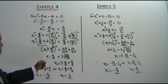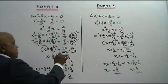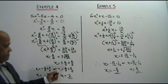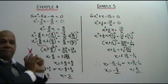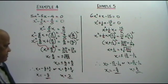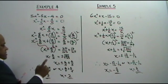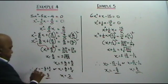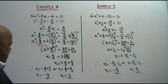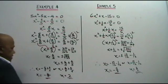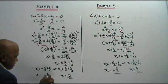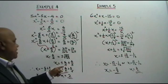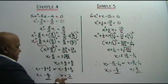Therefore, x minus 4 over 5 equals to plus or minus the square root of 36 over 25, which is 6 over 5. Negative 4 over 5, bring it to the other side — you get positive 4 over 5. So from here, you get two values for x. One value is negative 6 over 5 plus 4 over 5, which gives you negative 2 over 5. The other value of x is 6 over 5 plus 4 over 5, which equals to 2.